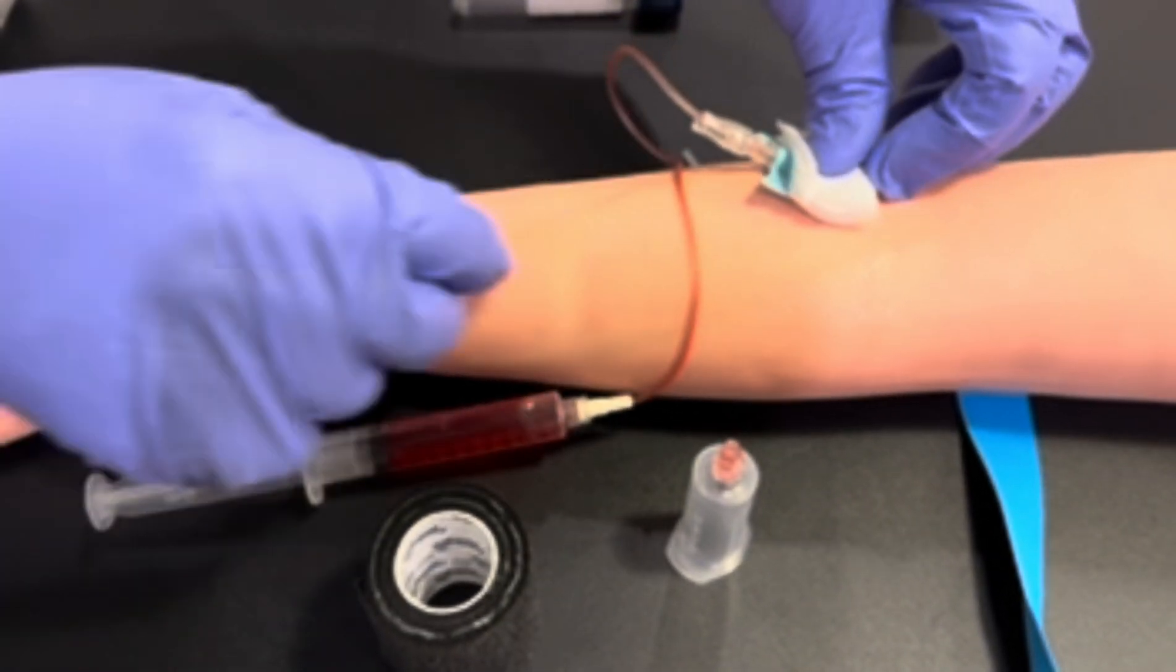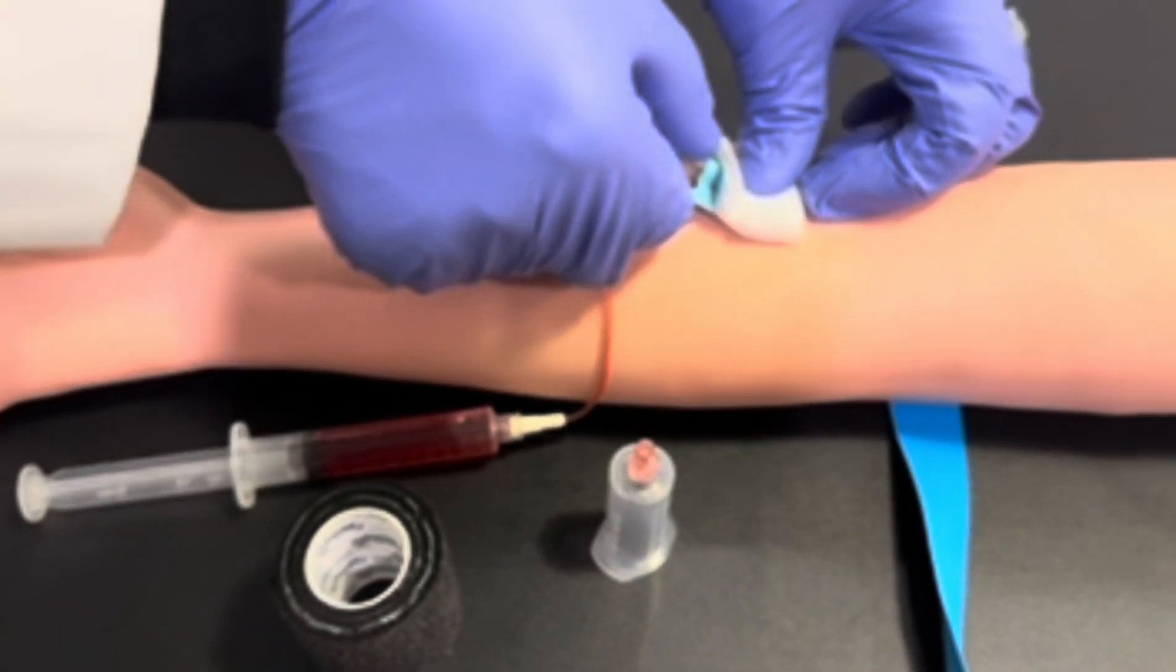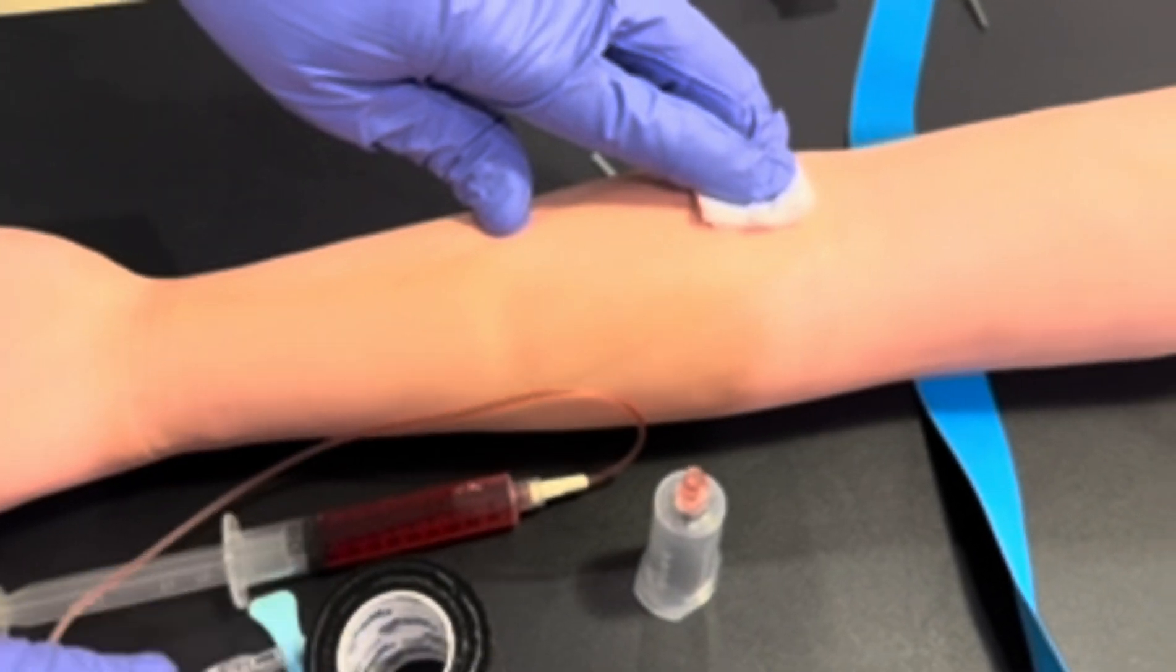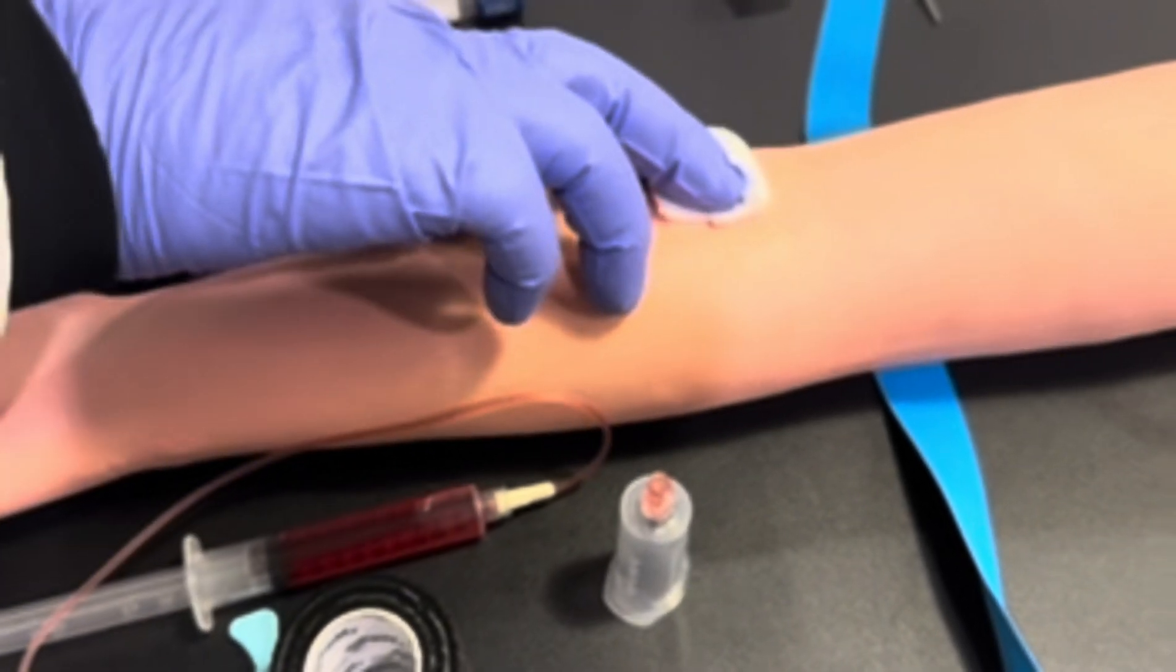Use your 2x2 gauze and retract the butterfly needle safely. Apply pressure to the site with the 2x2 gauze.